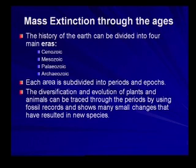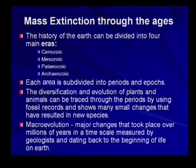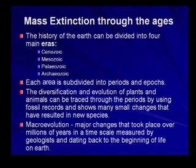Diversification and evolution of plants and animals can be traced through these periods using fossil records, showing many small changes that resulted in new species. Another term you must know: macro evolution — major changes that took place over millions of years, in a timescale measured by geologists and dating back to the beginning of life on earth.